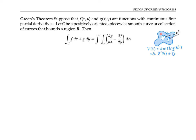Recall that the notation integral of f dx plus g dy, since this is a line integral over a curve, really means that we take the integral of f evaluated at x(t), y(t) times x'(t) dt, plus the integral of g of x(t), y(t) times y'(t) dt, where t ranges over the interval for the curve. Here x and y refer to the components of the parameterization, so r'(t) is our (x'(t), y'(t)).